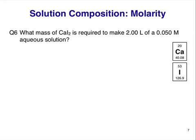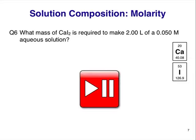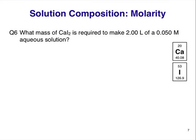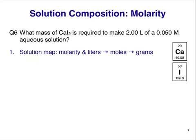Question 6: What mass of CaI2, calcium iodide, is required to make 2.00 liters of a 0.050 M aqueous solution? Pause the video now and calculate the answer. Like the previous example, we are given the concentration of the solution and the volume needed, and asked to find the mass of solute. We'll start with the solution map. We'll use the molarity equation as a starting point: molarity equals moles of solute divided by liters of solution. We'll rearrange it to find the moles of solute, then another calculation is needed to turn moles of solute into grams of solute.